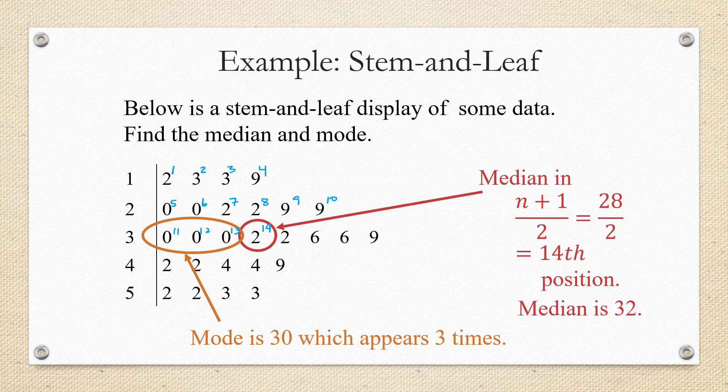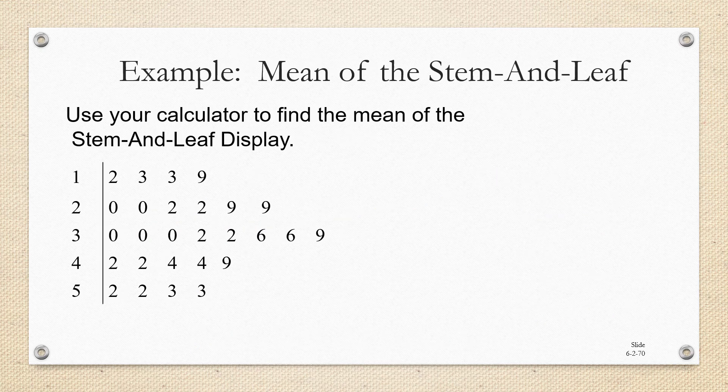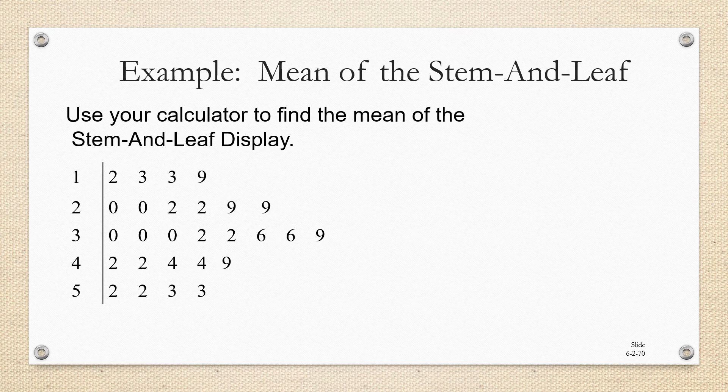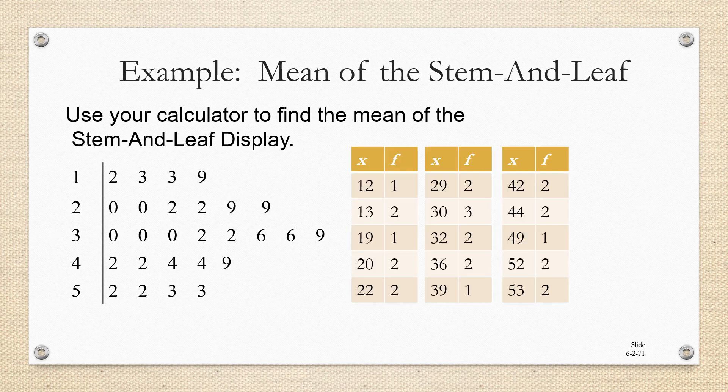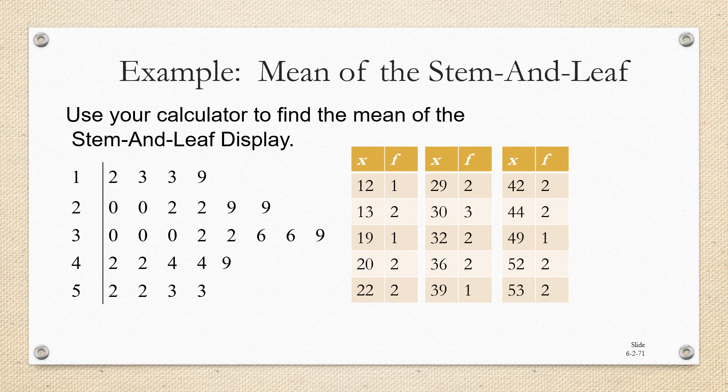All right, now let's try finding the mean. To find the mean of a stem and leaf display, it's just like finding the mean of any list of data. You can use your calculator to find the mean. You can set it up as a frequency distribution and find the mean. What I mean by that is here I've listed each data value and the number of times that data value occurs. So you could use your calculator function where you enter the data and the frequencies if you would like.